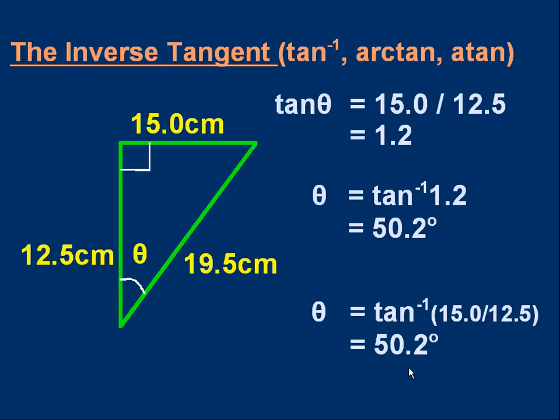We could have written that down a bit more compactly in one go. We could have written down, if you're writing this in an exam, say, you could just write down theta is tan minus 1 in brackets 15 over 12.5. Do it all in one go.